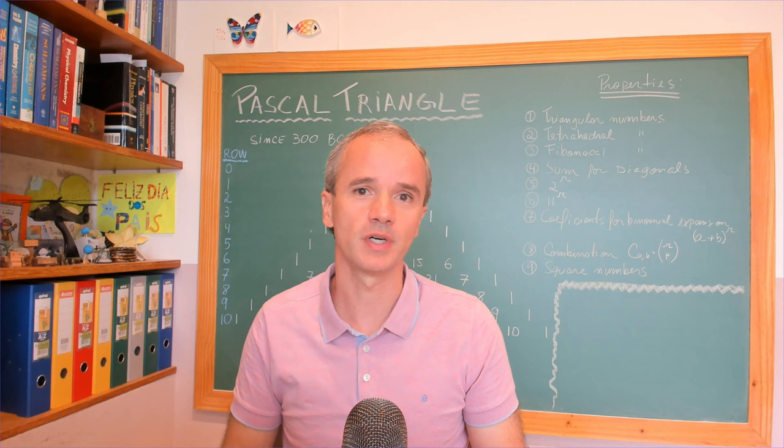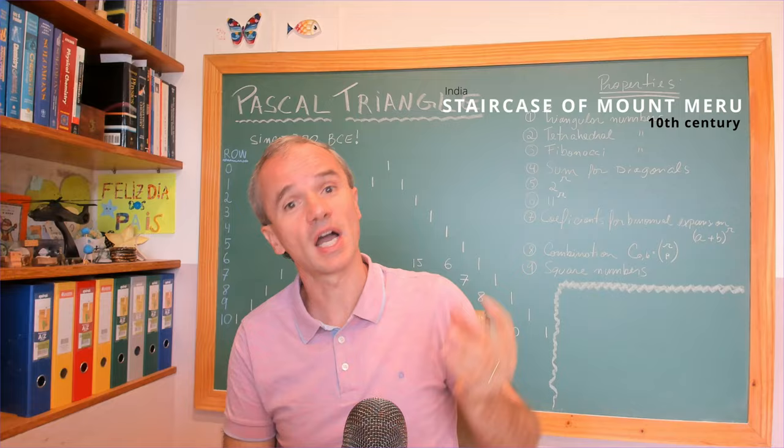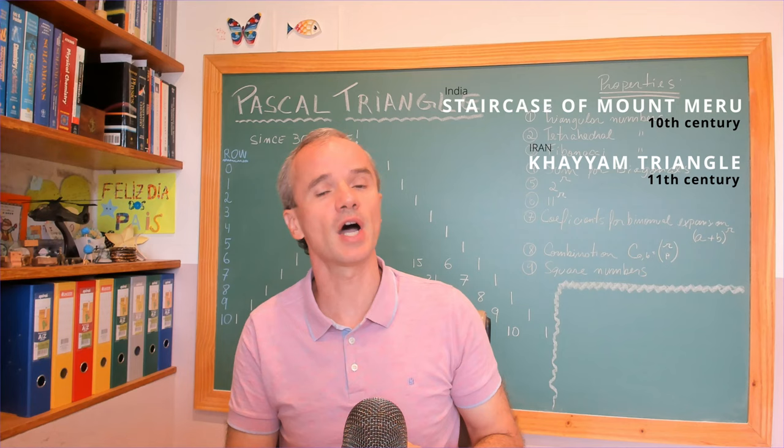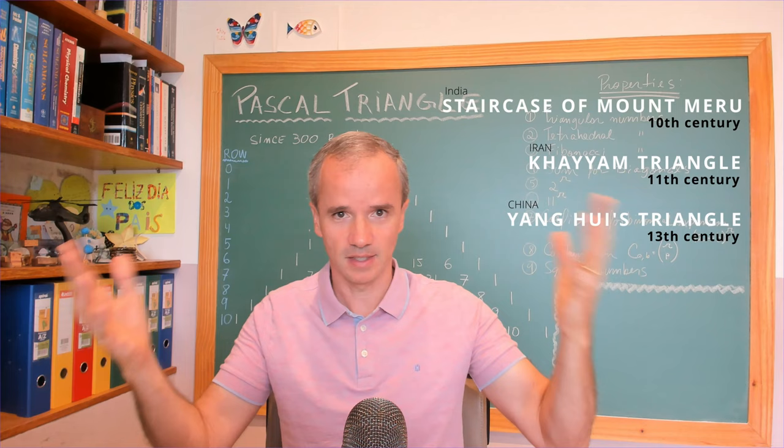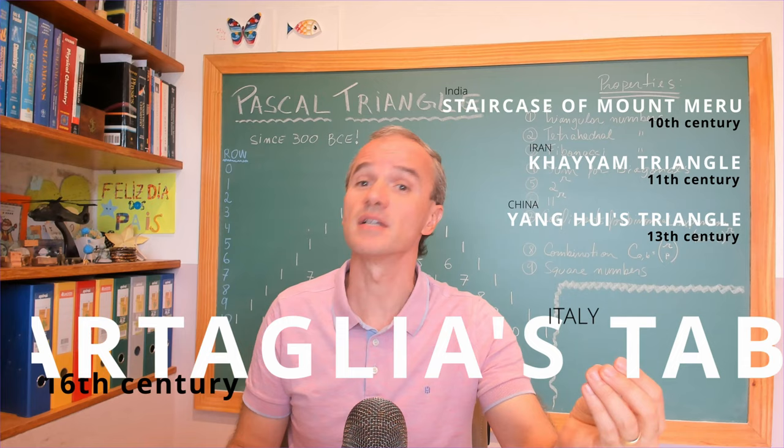Let's see a few of them. It's called the Staircase of Mount Meru in India, and it started on the 10th century. Now, it's the Kayun Triangle for Iran. Then later, it passed through China called Yang's Hui Triangle. Then finally, on the 1400s, it started to appear in Europe, and in Italy it's known as Tartaglia's Table.